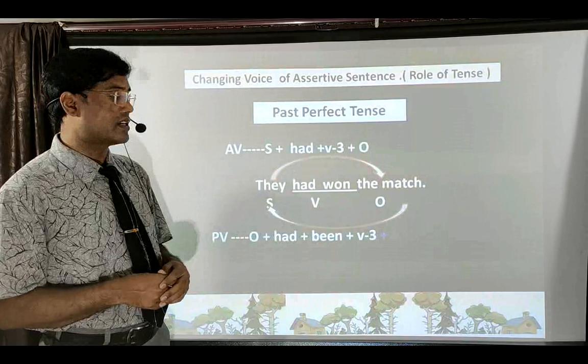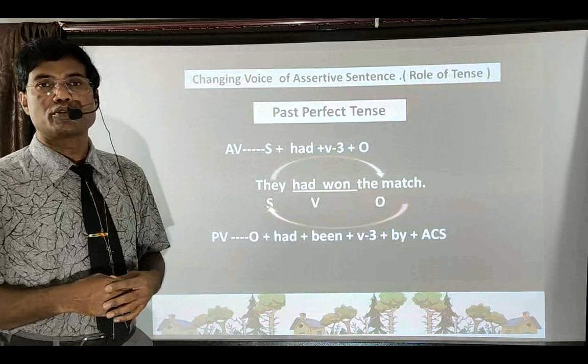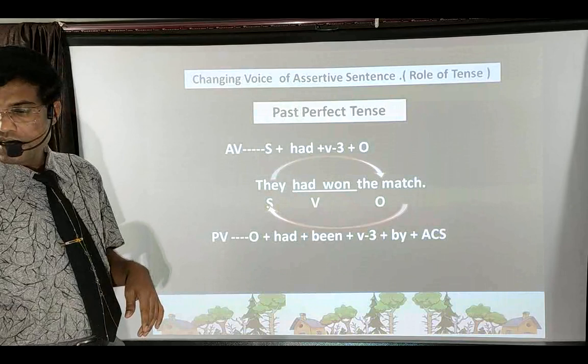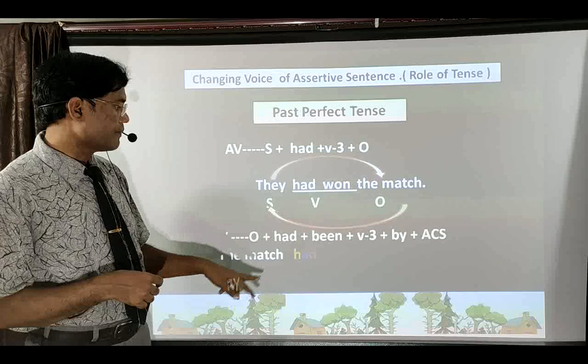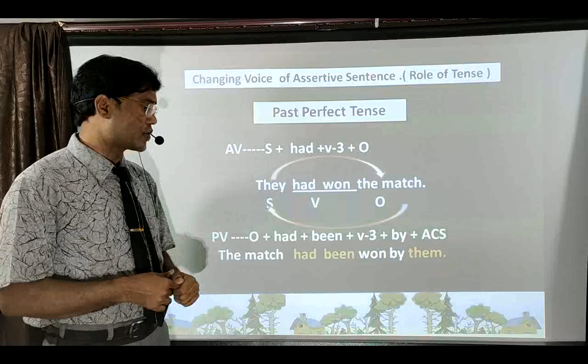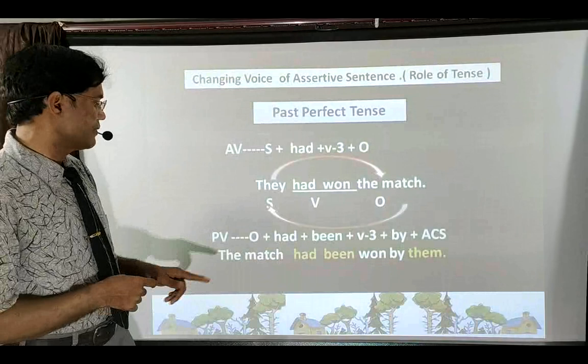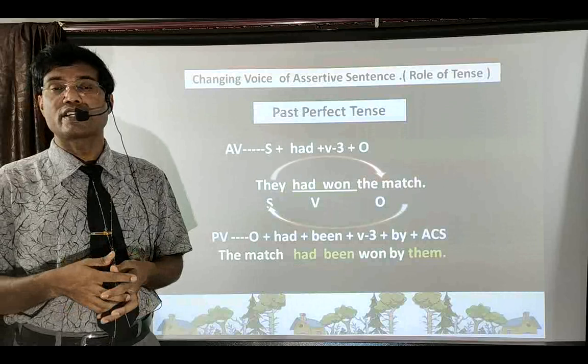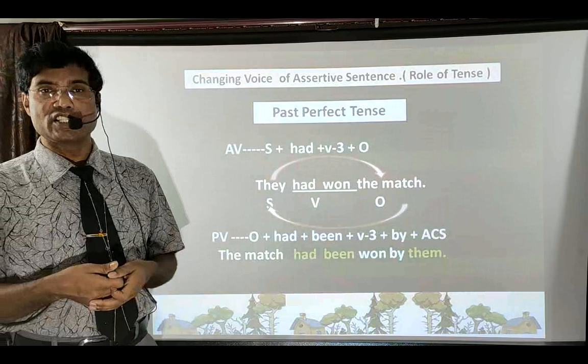Passive voice formula for Past Perfect Tense: object first, then 'had' (only one word for perfect tense), then extra word 'been', then third form of verb (already available, no need to change), then 'by' with objective case of subject. Applying: 'The match' + 'had' + 'been' + 'won' + 'by them'. So: 'The match had been won by them.' This is how you make passive voice in Past Perfect Tense.